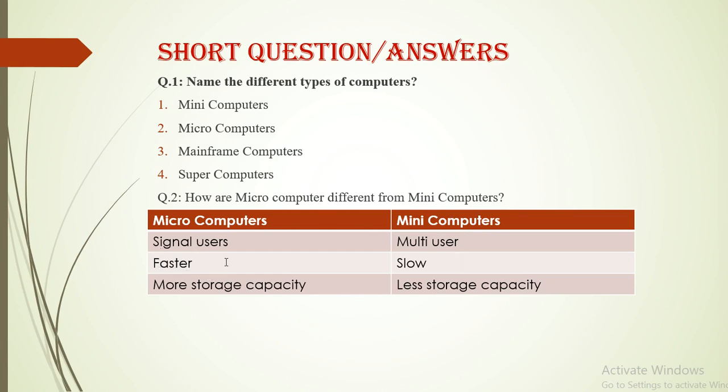Microcomputers are faster and mini computers are slow. Microcomputers have more storage capacity and mini computers have less storage capacity. Microcomputers have more capacity to store as compared to mini computers. Mini computers have less than microcomputers.